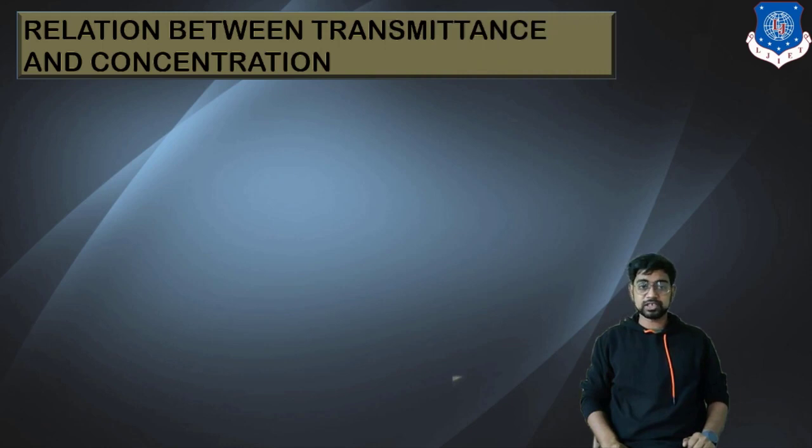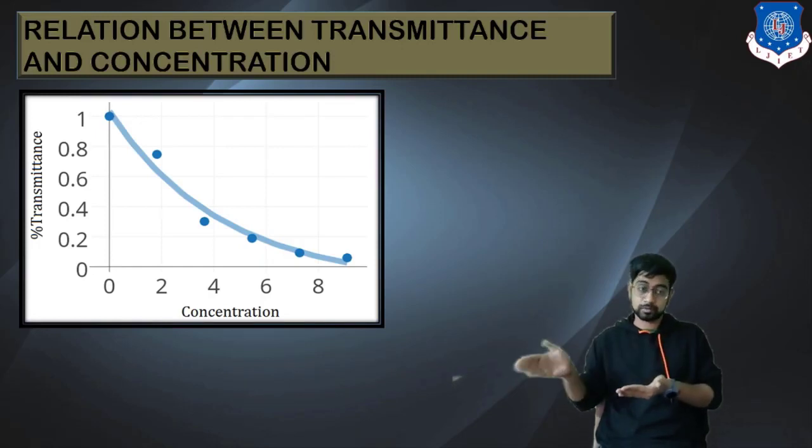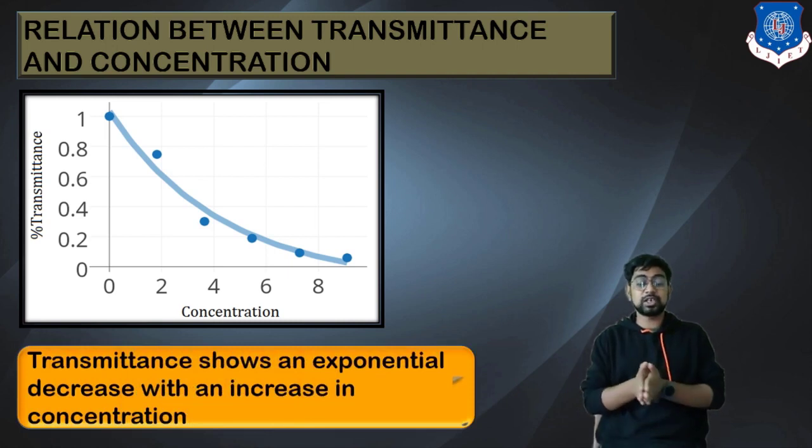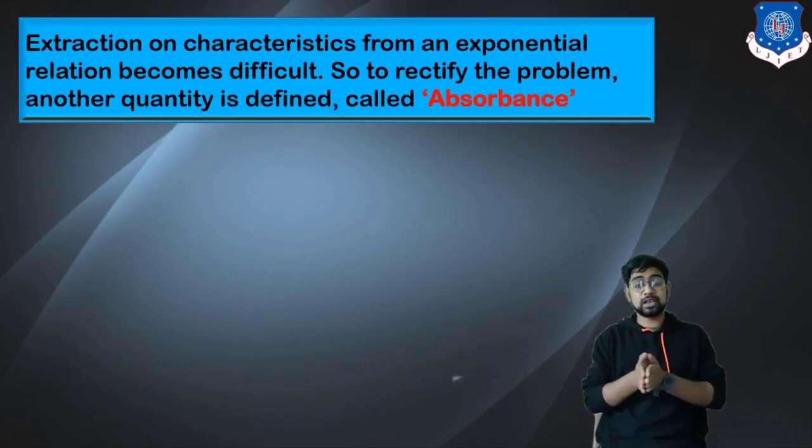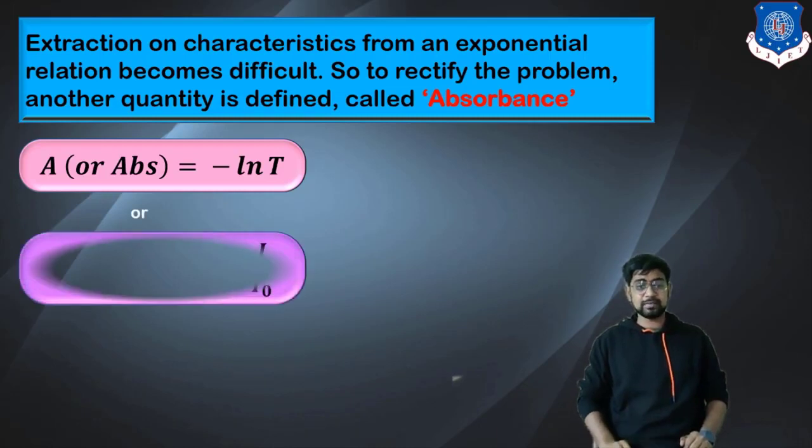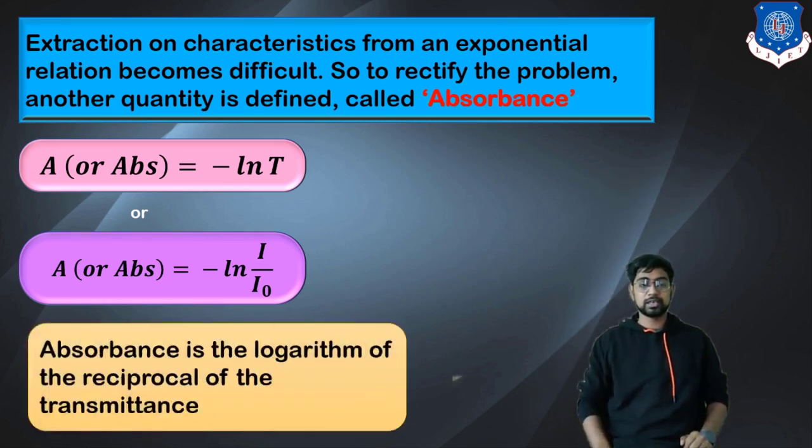We can also get a relation between transmittance and concentration. The more the concentration, the less it would be allowed to transmit through. The more dense the material is, the light would penetrate through it comparatively less. Transmittance shows an exponential decrease with increase in concentration. To rectify this problem, another quantity is taken: absorbance. Absorbance is equal to the inverse of ln of T, which can be written as A = -ln(I/I0). Absorbance is the logarithm of the reciprocal of transmittance. We have got two terms: transmittance and absorbance.